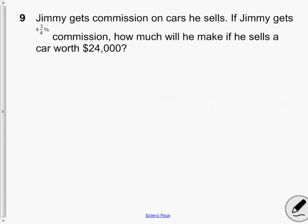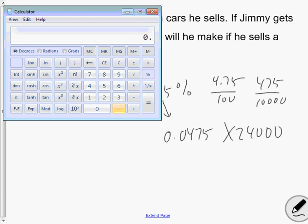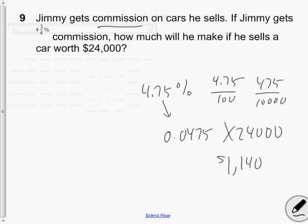Question 9, it says, Jimmy gets commission. And commission is a percentage that a seller gets to keep if they sell a product. In this case, it's selling a car. So he gets to keep 4 and 3 quarters for himself. So the first thing we want to do is think of 4 and 3 quarters percent really as being 4.75%, then as being 19/4%, then as being 0.0475. And when we want to figure out percentage of 24,000, we realize that we can multiply those two together to get the actual value. 4 and 3 quarters percent of 24,000 is $1,140.